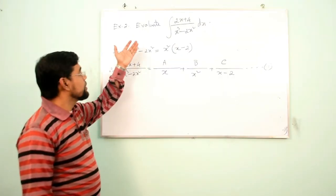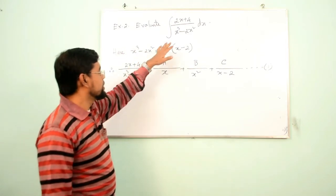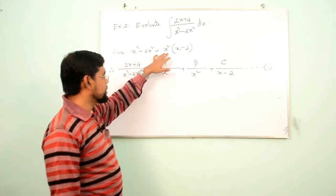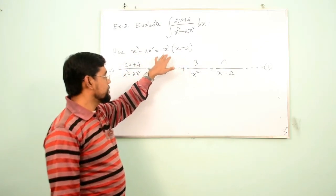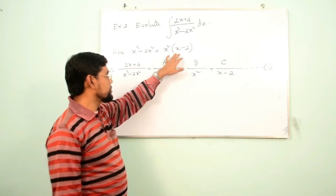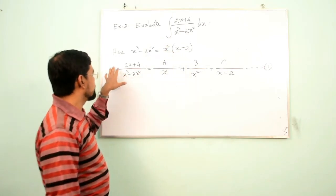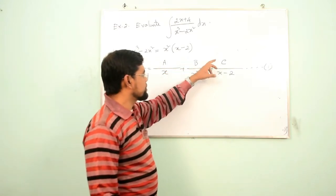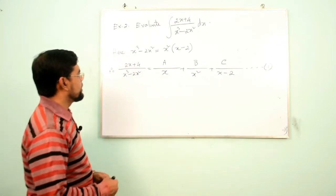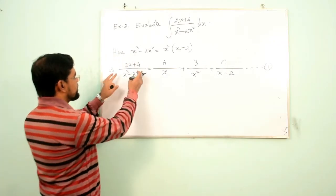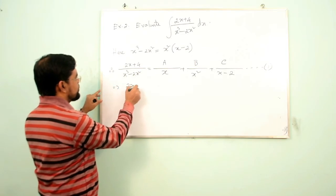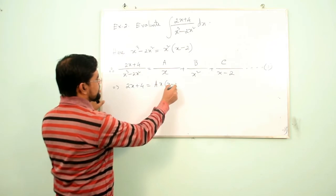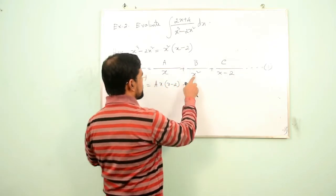Let us try another example: evaluate the integral where the denominator is x³ − 2x², which you can factorize as x²(x − 2). We have two linear factors, one of which is raised to the power 2. Therefore we write A/x + B/x² + C/(x − 2), and multiplying both sides by x³ − 2x² gives A·x(x − 2) + B(x − 2) + C·x².